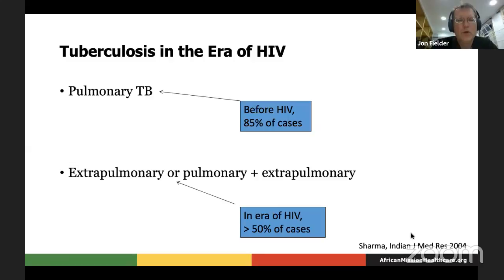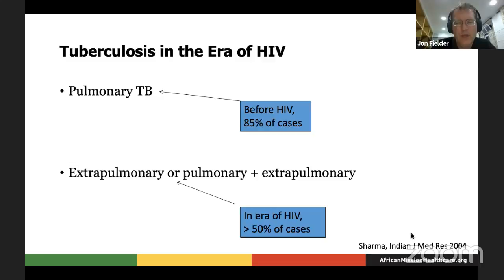Before the HIV epidemic, most tuberculosis was confined to the lung — about 85% of cases. Now in the era of HIV, most cases are actually outside the lung, meaning either extrapulmonary alone in their manifestations or both pulmonary and extrapulmonary. This reflects the biology and immunology of a suppressed immune system, allowing TB to escape the confines of the lung, spread through the blood, and land somewhere else. It can land anywhere — the liver, the spleen, the gut, the brain, the lymph nodes.